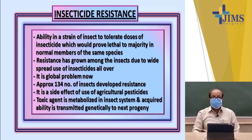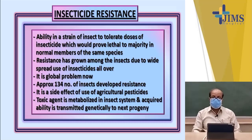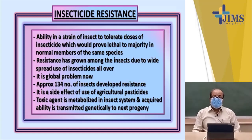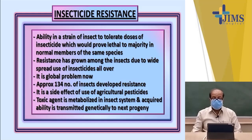Vector resistance, or insecticide resistance, is the ability in a strain of insects to tolerate doses of insecticides which would otherwise prove lethal to the majority of normal members of the same species. This resistance has grown among insects due to widespread use of insecticides all over the world. It is now a global problem, and approximately 134 species of insects have been found to be resistant or tolerant to commonly used insecticides. It is a side effect of the use of agricultural pesticides. The toxic agent is metabolized within the insect's system, and through genetic mechanisms, this tolerance is transmitted to the next generation.